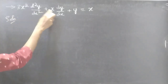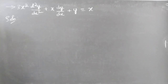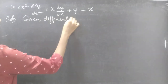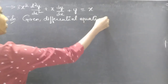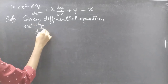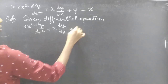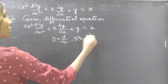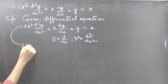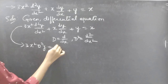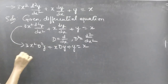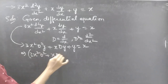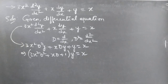We are given a differential equation with variable coefficients. Now we are going to reduce this to a differential equation with constant coefficients by making some substitution. Given differential equation: 3x squared d squared y by dx squared plus x into dy by dx plus y equal to x. We know that d is a differential operator with independent variable x, then d squared will be d squared by dx squared. We can write the above equation as 3x squared d squared plus xd plus 1 into y equal to x, which is a Cauchy's equation.